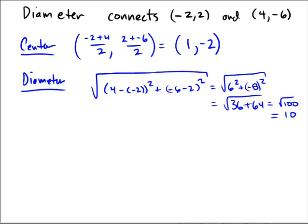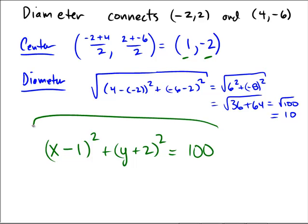So final answer is going to be x minus 1 squared plus y plus 2 squared. The 1 and the 2 come from the center. That's going to equal 100 as that is the, uh oh, that's the diameter. Wait a second. Take that diameter and divide it by 2 so I get 5.